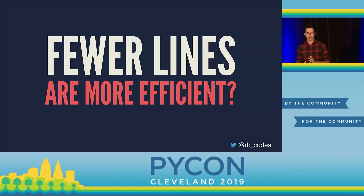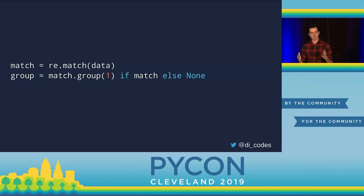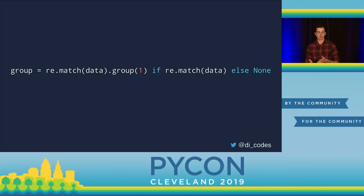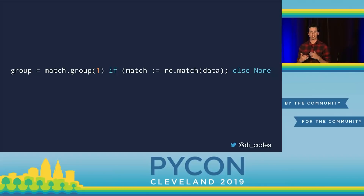Also, fewer lines could be more efficient. Some people evaluating this PEP found examples like a regular expression match where a programmer just threw it all in one line to keep it simple — but they ended up calling re.match twice, making it twice as slow. With the walrus operator, they could have written it as exactly the same length — still one line — but calling match only once. So ultimately, this is kind of a trade-off between developer efficiency and computer efficiency.